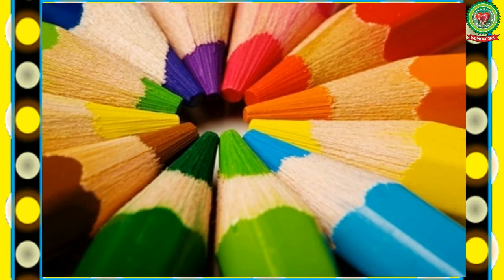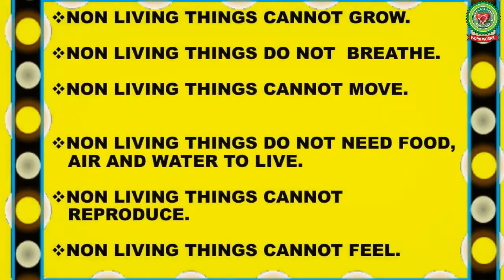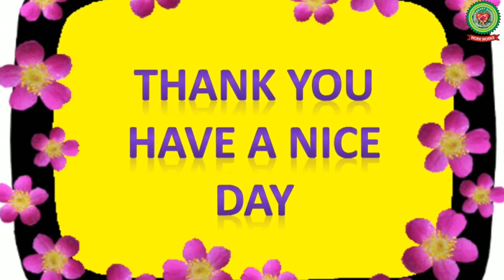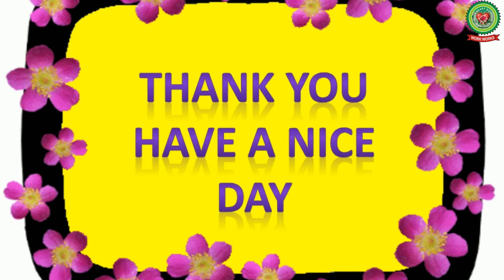Let's revise all the features of non-living things we have learned: non-living things cannot grow; non-living things do not breathe; non-living things cannot move; non-living things do not need food, air, and water to live and grow; non-living things cannot reproduce; and non-living things cannot feel. This is all for today — revise the terms and features of non-living things.